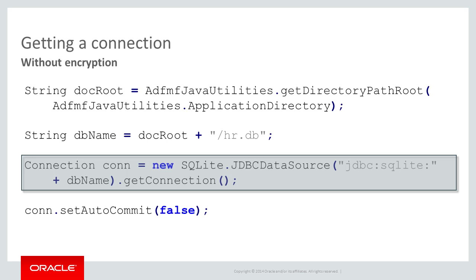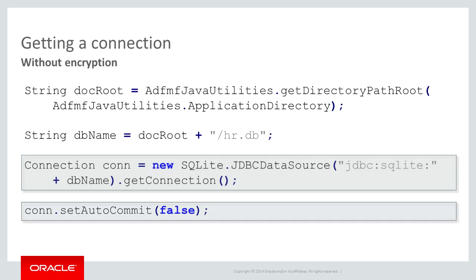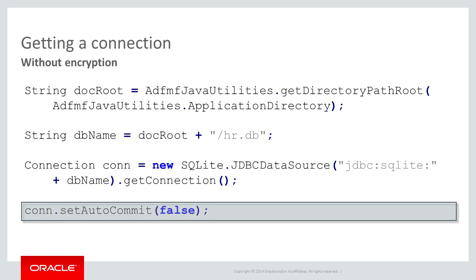Parameters for JDBC connections are specified through URLs. The URL must always start with the JDBC SQLite prefix, followed by the full path to the database file. I recommend you turn off autocommit as a matter of course. You should always manage transactions explicitly, since this improves performance for inserts, among other things.